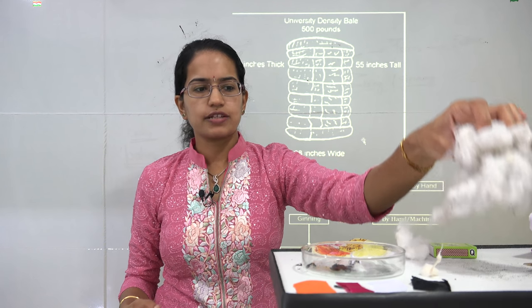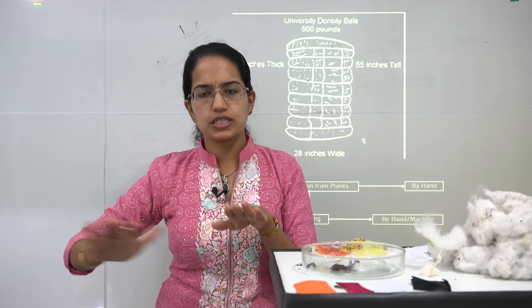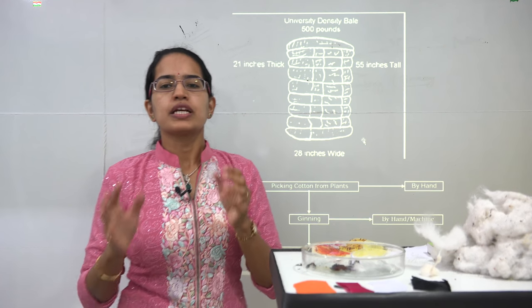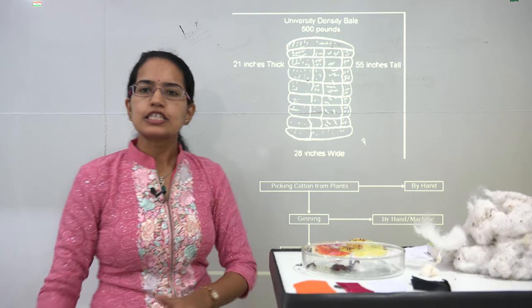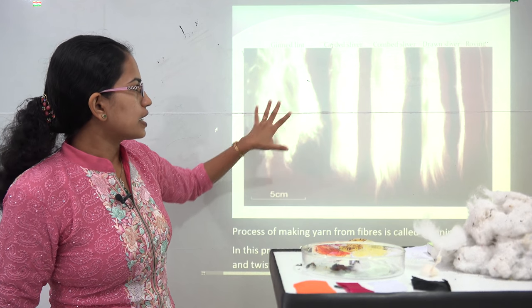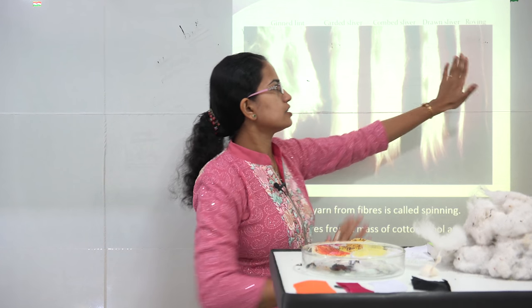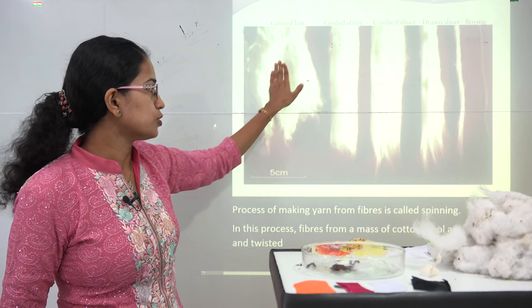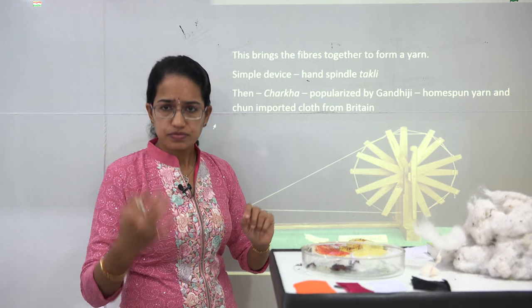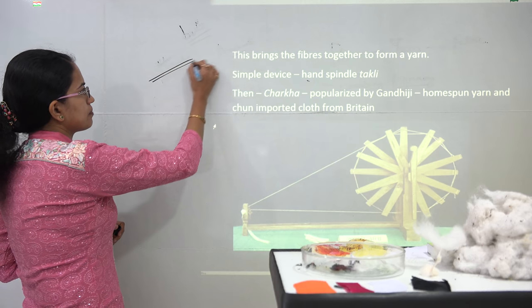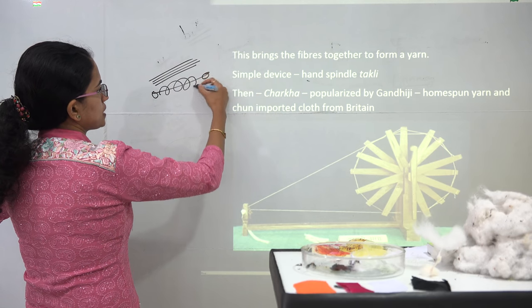To recap the first two processes: we picked cotton from the fields, removed the seeds through the process of combing or ginning, pressed the cotton and transported it — that is baling. The next process is spinning. Under spinning, various lint filaments are present — some more dispersed, some smaller and less dispersed — and through spinning these are brought together to prepare yarn.